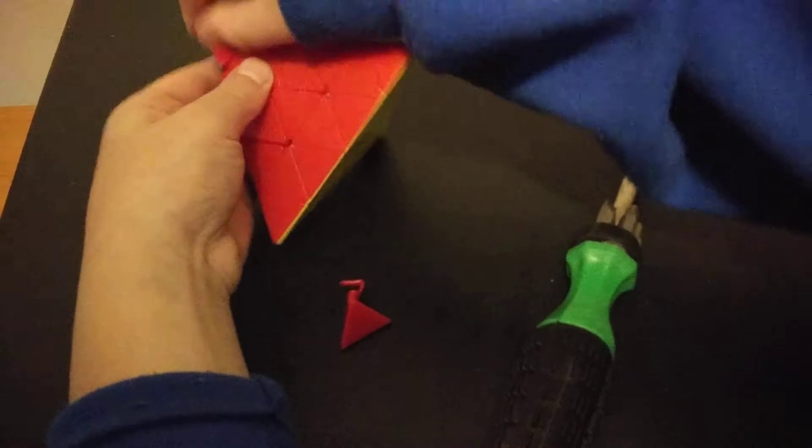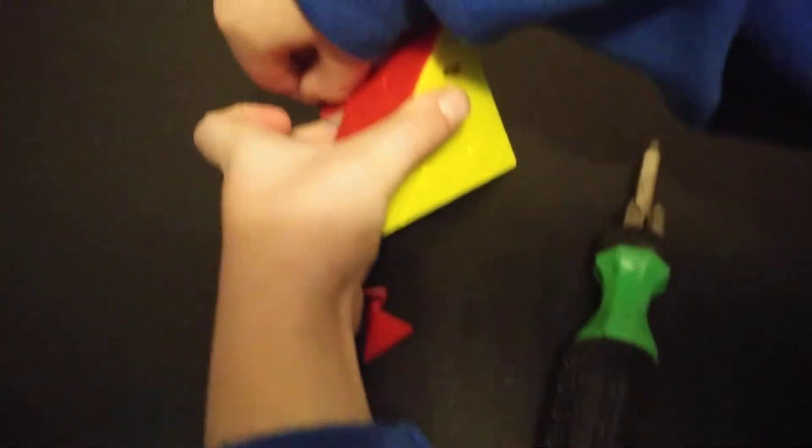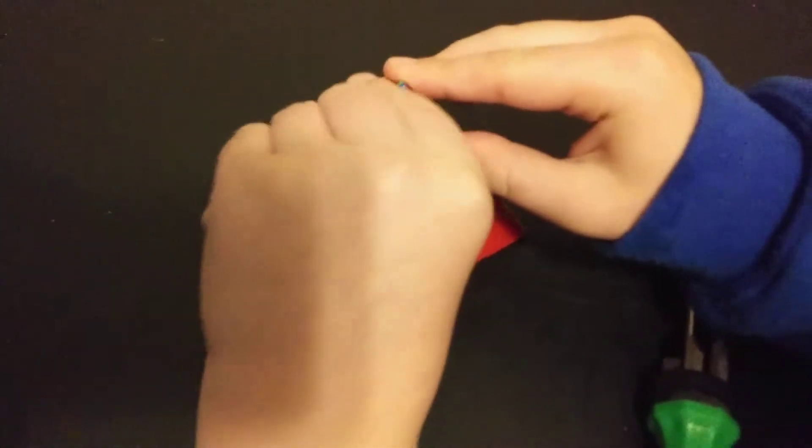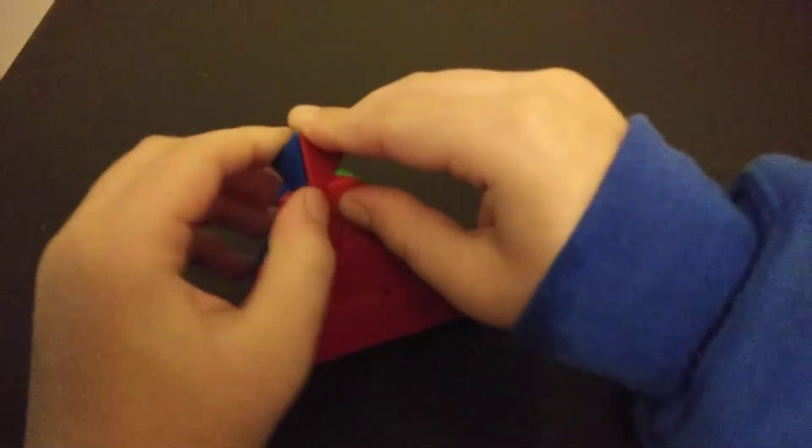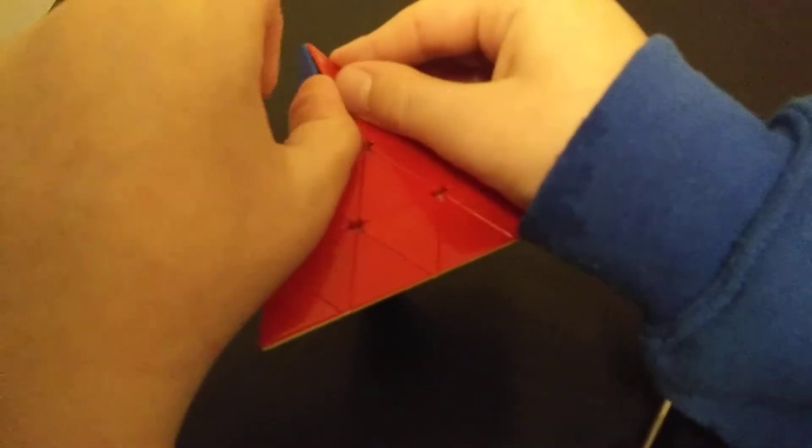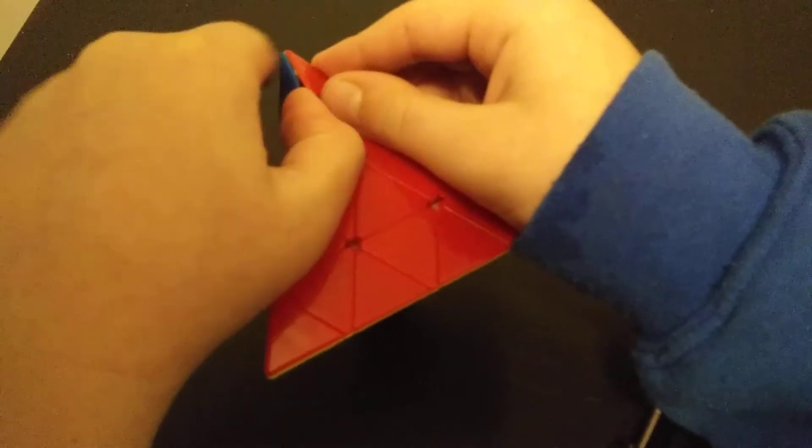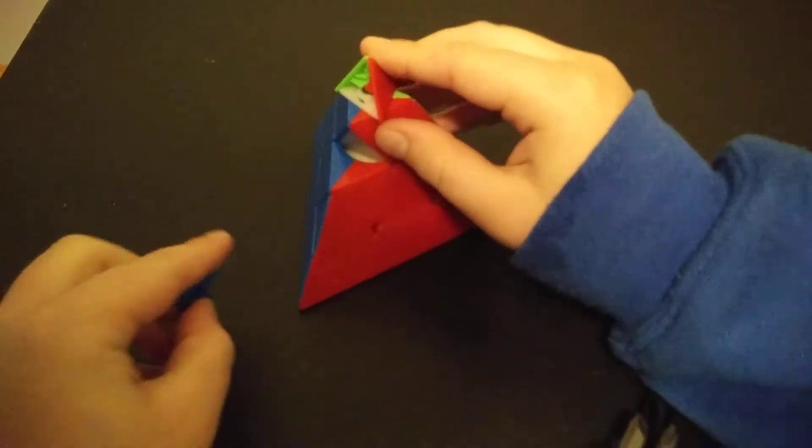Then you're going to kind of dig your nail under the tip. You're going to disassemble the tip. So you're going to pop out a tip piece. Basically, all I did is I dug my nail into that little crack and popped out a tip piece.